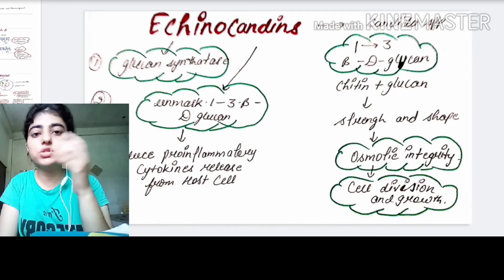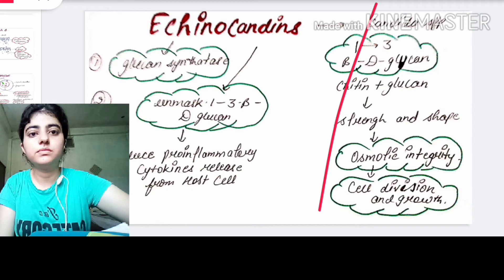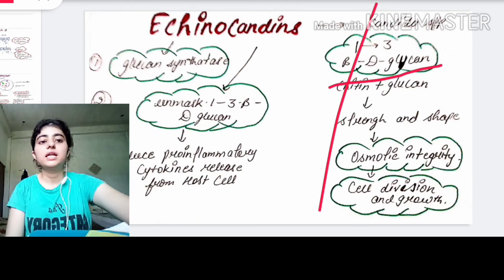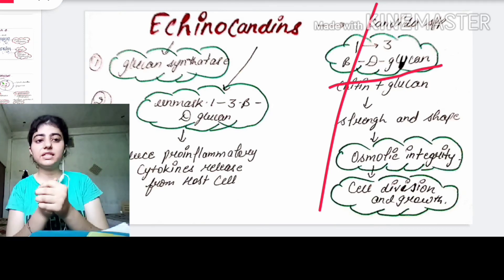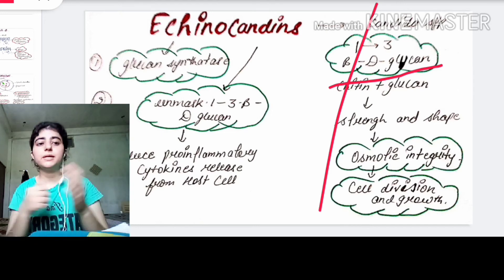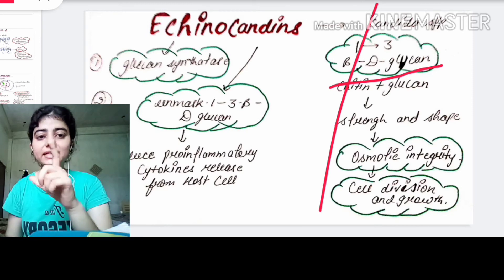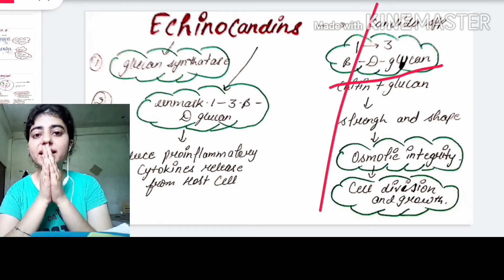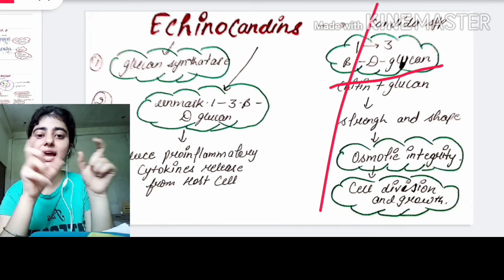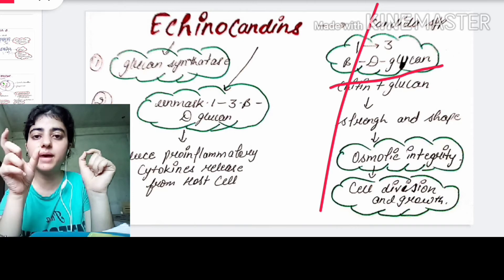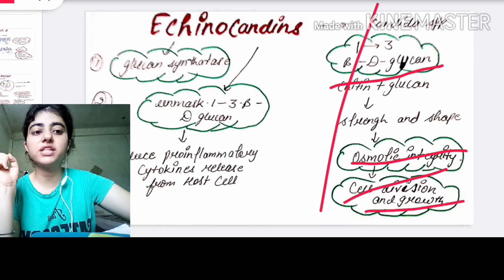Most pathogenic fungi contain 1,3-beta-D-glucans. These glucans, when combined with chitin, provide strength and shape to the fungal cell. Together, chitin and glucan are responsible for osmotic integrity, cell division, and growth of the fungal cell.